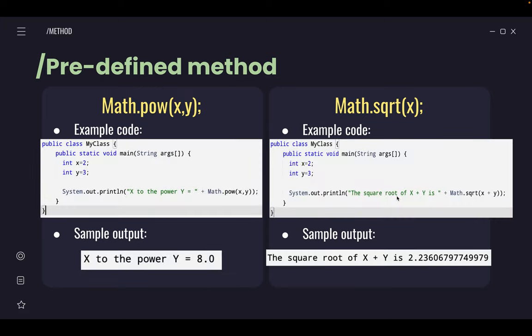We have this simple class here where we have two integers: x equals 2, y is assigned to 3. We have x to the power of y and we call back the predefined method Math.pow(x,y). So the sample output will be 8.0, which means 2 to the power of 3.